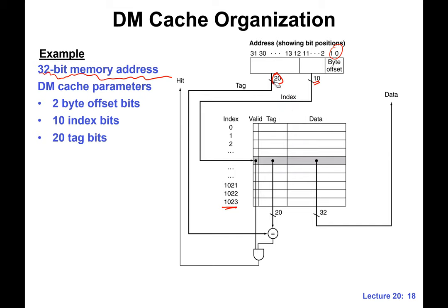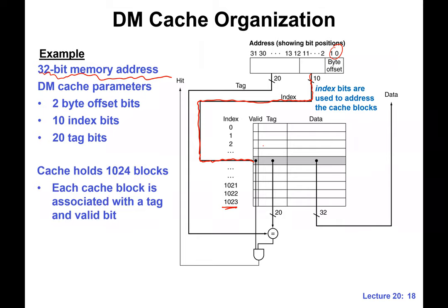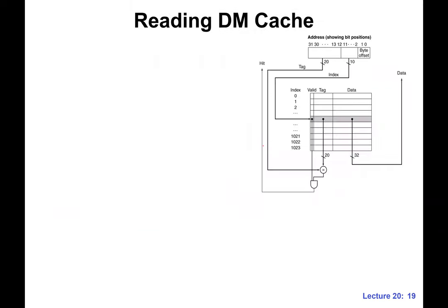Given a memory address, say a load instruction, we extract the 10 index bits and use them to index the cache — accessing one of the cache lines. We then use the index to address the specific cache block in the cache.